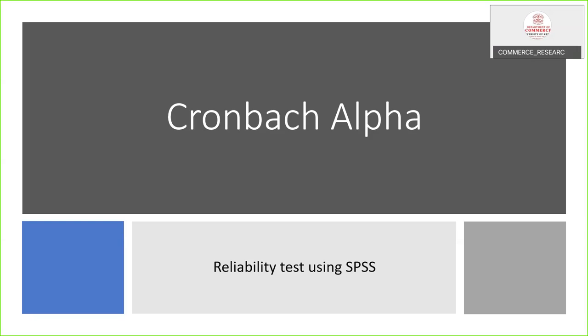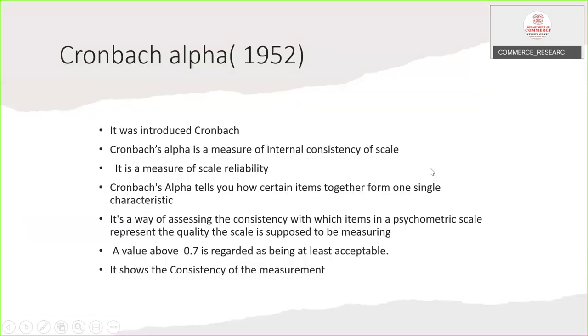For checking reliability, we are using Cronbach alpha. Cronbach alpha is a tool which is popularly used for checking reliability. Cronbach alpha was introduced by Cronbach in 1952. Cronbach alpha is a measure of internal consistency of scale. It is a measure of scale reliability.